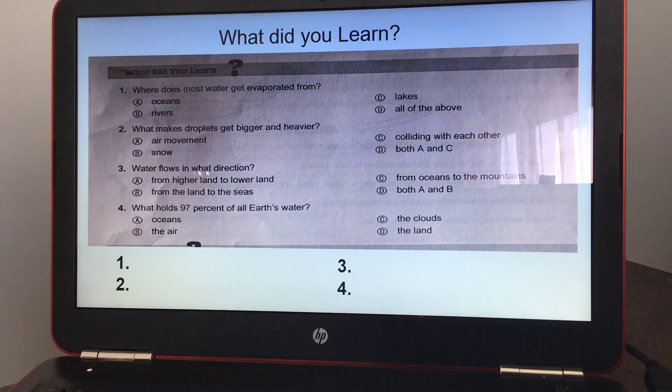Water flows in what direction? Your answer is either A, from higher land to lower land, B, from the land to the seas, C, from the oceans to the mountains, and D, both A and B. And number three, your answer should have been D, both A and B, from higher land to lower land, and from the land to the seas.